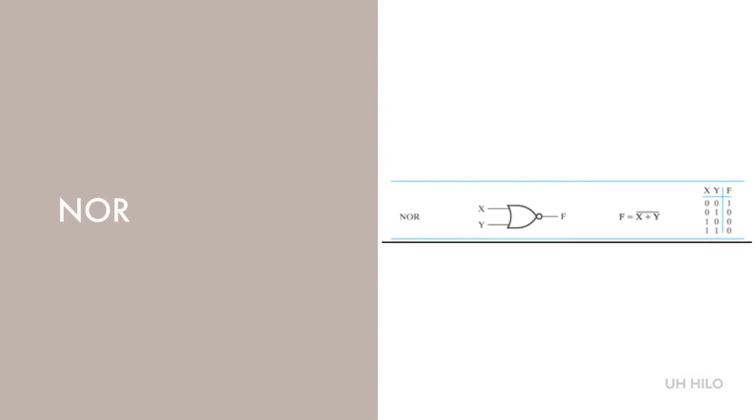This is the NOR gate. It represents the complement of the OR function. It has an output of one only when both inputs are zero. The drawing is an OR gate, with the negation inverter leading to the output.